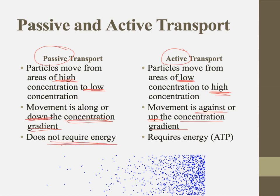When you try to go the other way around — pushing molecules from where they're really spread out to where they're really crowded — that's not something that happens normally. So you're going to have to put energy into that movement, and that energy is usually going to be in the form of a molecule called ATP. Don't worry if you don't know what that is right now; you will later.